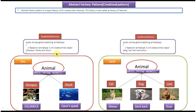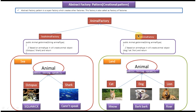Based on the animal type, it will create the corresponding animal object and return it to the caller. So here you can see there are two factories: sea animal factory and land animal factory. These two are subclasses of the animal factory.